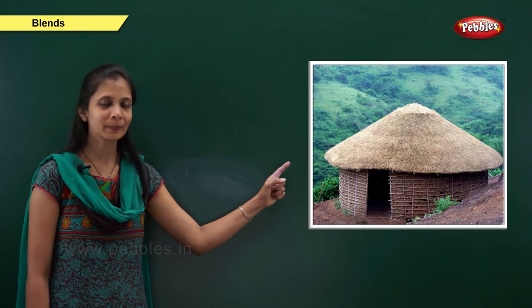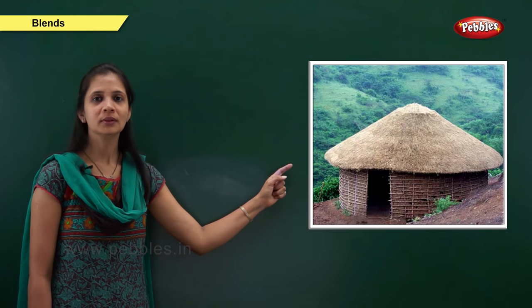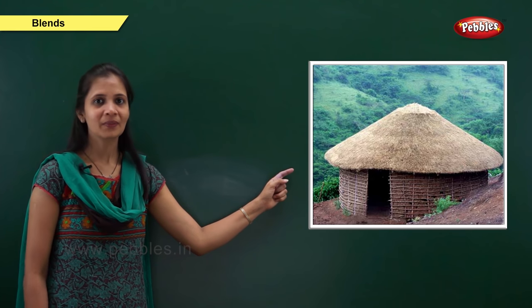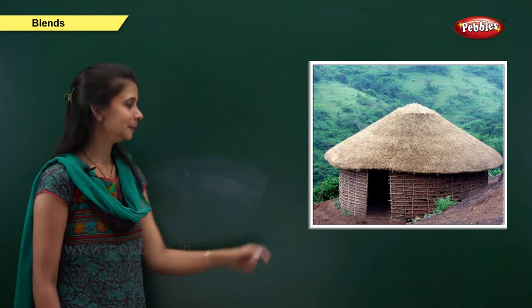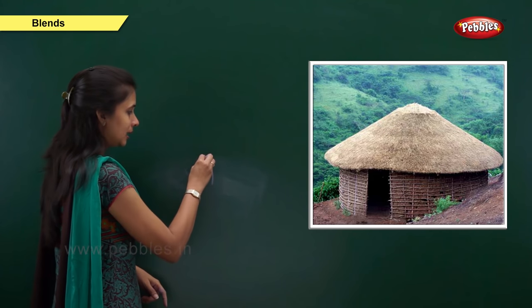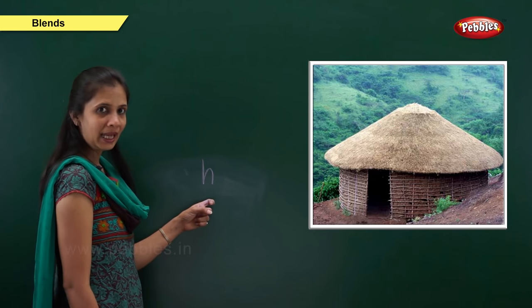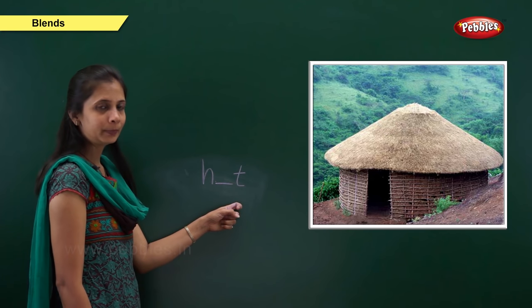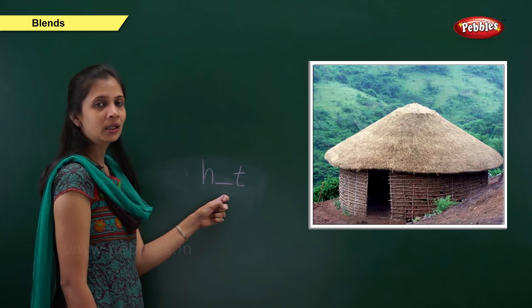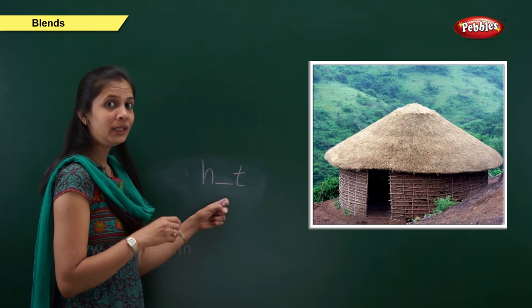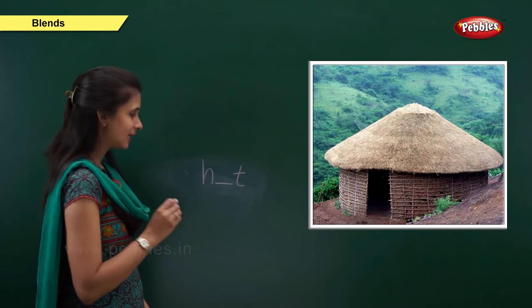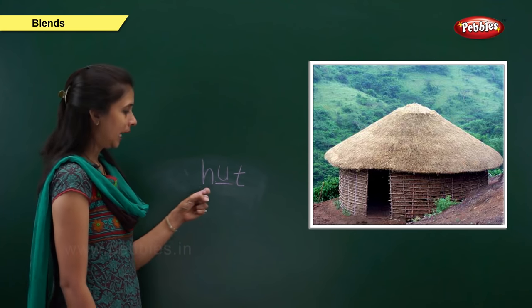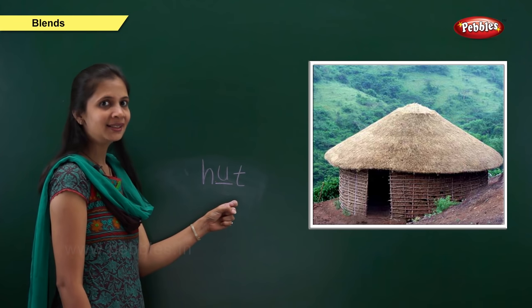Next one. Which picture is this? Yes, it is the picture of hut. What is the sound of this word? It is h, a, t — hut. Here 'h' is the beginning sound, so the letter is h. The ending sound is 't', so the letter is t. When the middle sound is 'a', the vowel is u. So: h, u, t — hut.